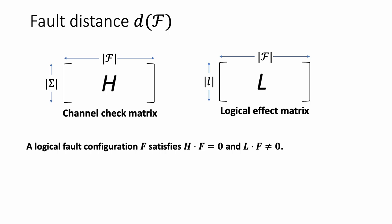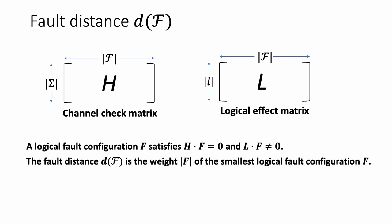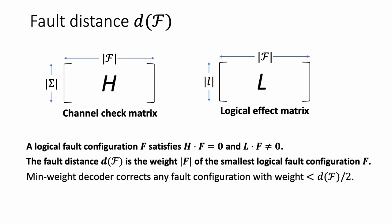A logical fault configuration F is a particular fault vector which has no syndrome — H acting on the fault vector gives zero — but it does have some logical action: L acting on F gives something that's not zero. An important quantity is the fault distance for a particular stabilizer circuit, which is the minimum Hamming weight of a fault satisfying this pair of conditions. The fault distance tells us the error correction power of the circuit — in particular, we can use a minimum weight decoder to correct up to half of the fault distance.